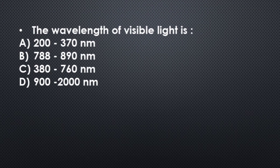The wavelength of visible light is: 200 to 370 nm, 788 to 890 nm, 380 to 760 nm, and 900 to 2000 nm. Its correct answer is option C, 380 to 760 nm.